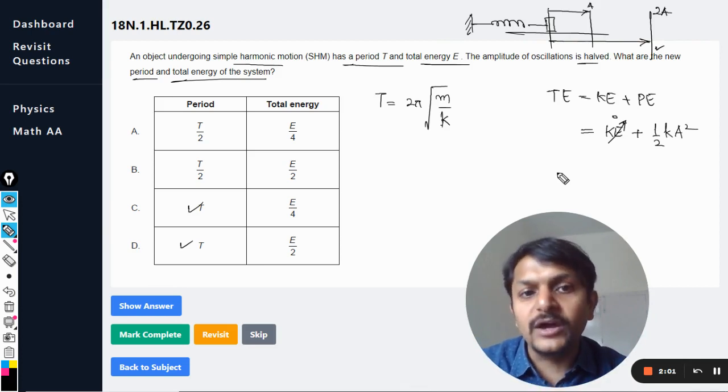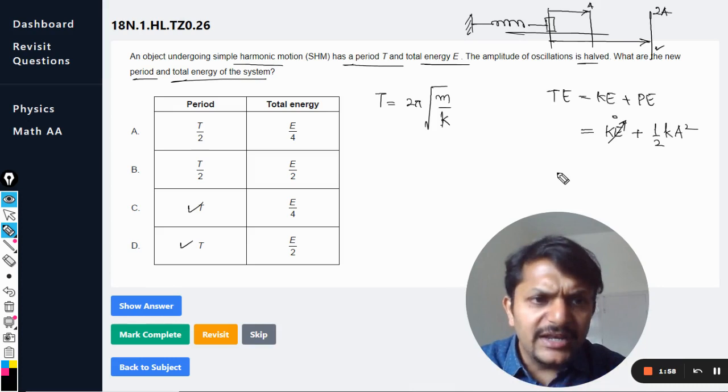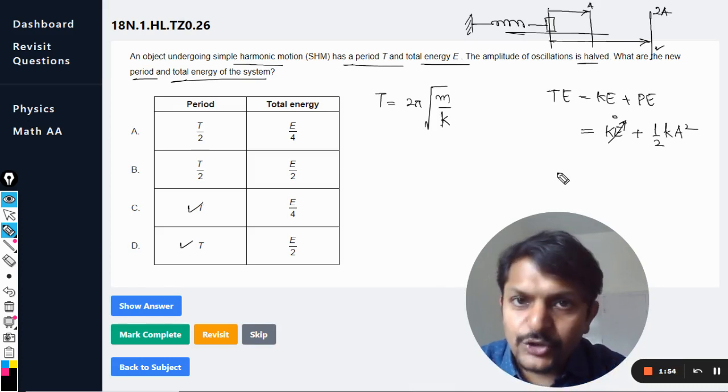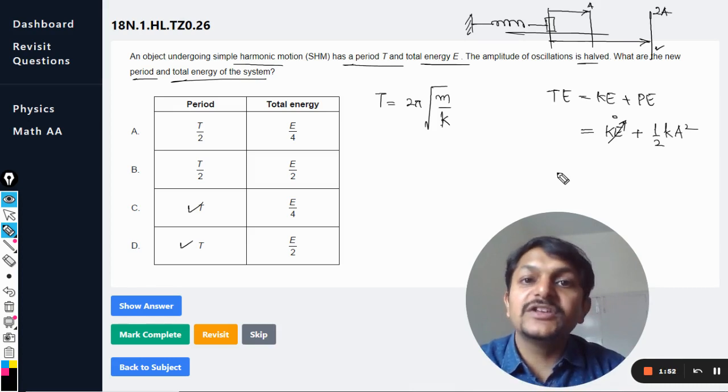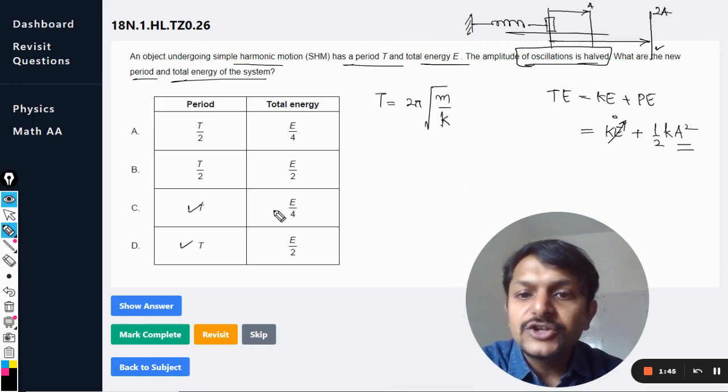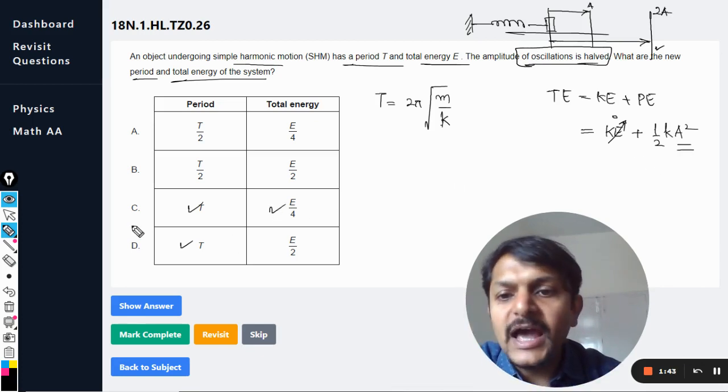Clearly, the total energy is now dependent on the amplitude, and it is varying with the square of the amplitude. So now the amplitude is halved, it only means that the energy is now 1/4. So energy is divided by 4 and the time period remains the same, so the answer will be C.